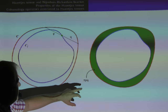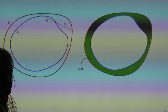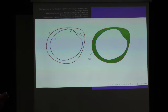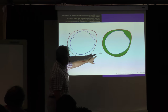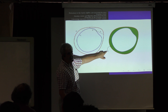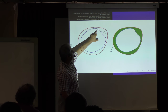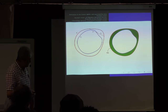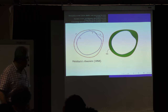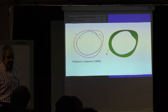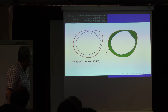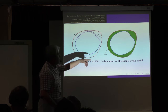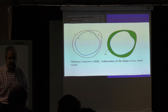The surprising result is that the area between both curves is exactly the area of an ellipse — the area of an ellipse with half-axes P and Q. This result is called Holditch's theorem, and it dates back to 1858. The surprising fact is that this is independent of the shape of the initial curve.